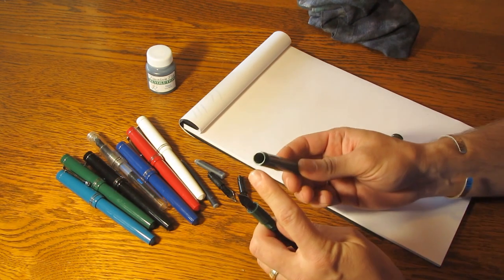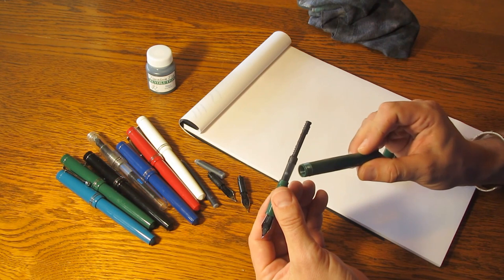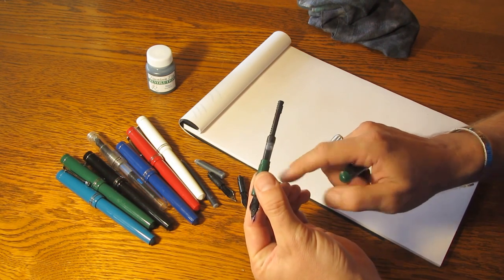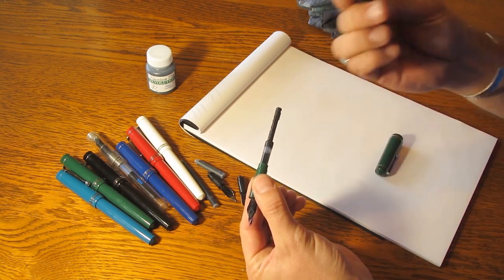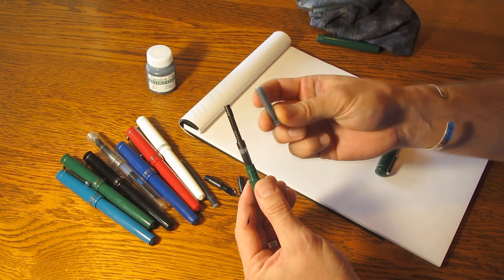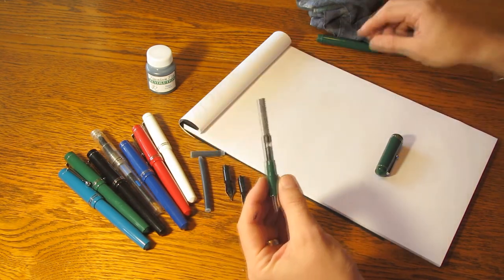The pen will also fill as an eyedropper, by the way, so if you wanted to, you could pull out that converter and put some silicon grease on your threads and fill that barrel directly and have a huge ink capacity. You could also fill it with a short international cartridge or a long international cartridge will also fit for extra ink capacity.